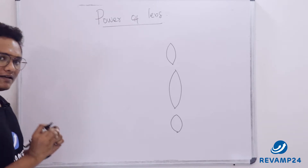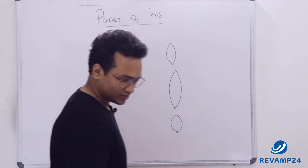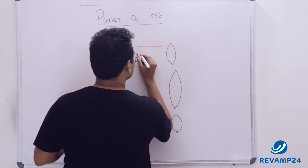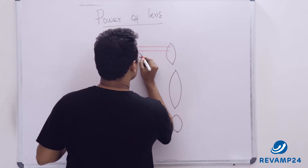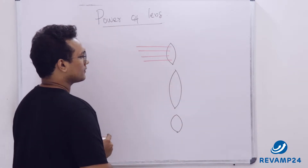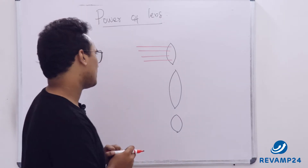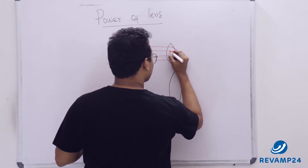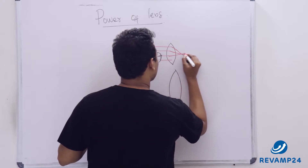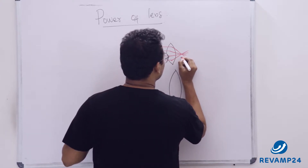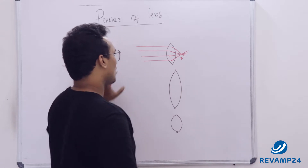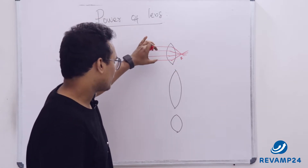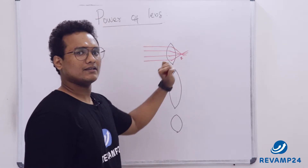Power is nothing but the bending power of a lens. When rays are coming parallel towards a lens, a convex or spherical lens has the property to focus these rays after refraction at a common point. This point is nothing but the focus — after refraction at the lens, these parallel incident rays pass through a common point.